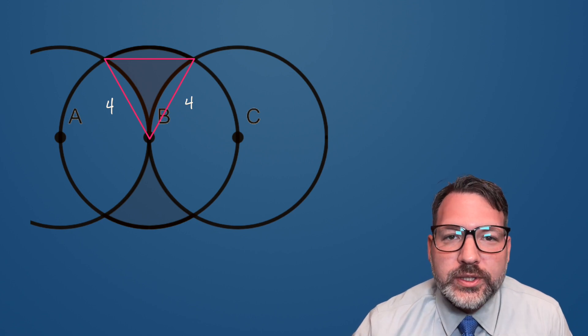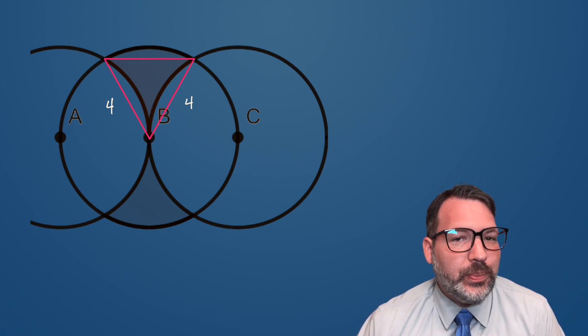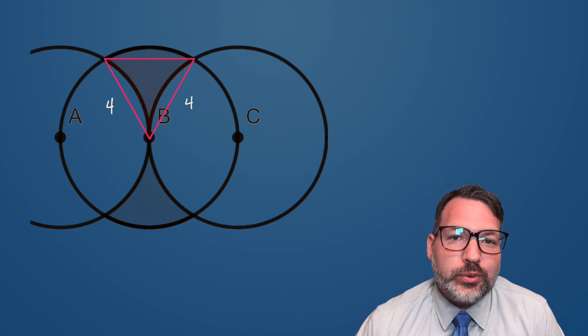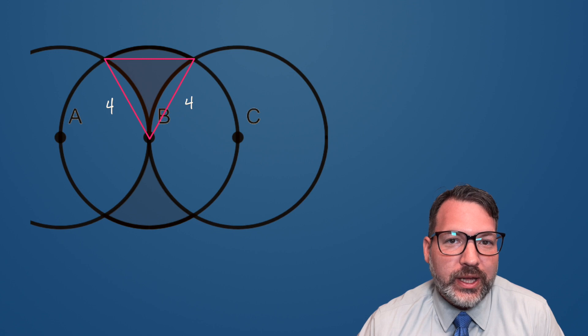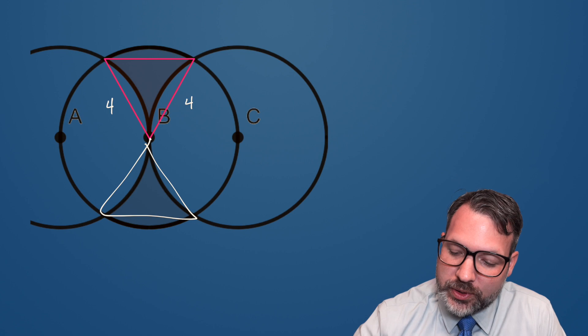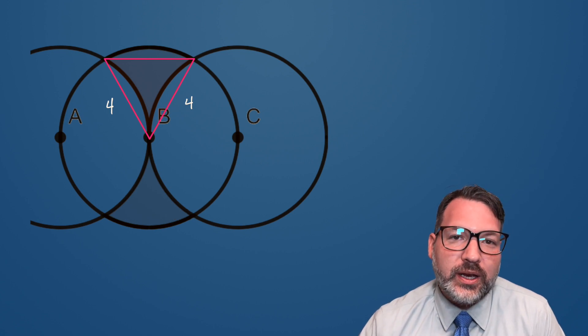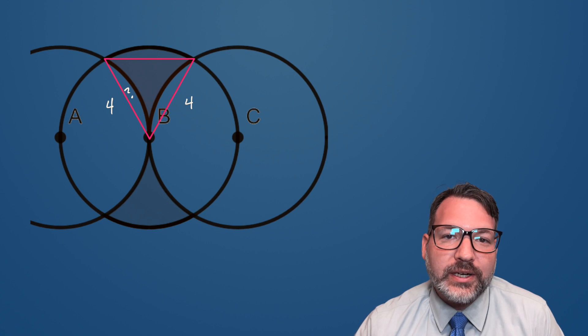If this were a multiple choice question, or if we only needed to roughly say what the area was, we're basically done at this point. 4 times √3 is about 6.8, so our answer clearly is a little smaller than 6.8 times 2, because again we have two of these different shapes. But in this case it's not a multiple choice question, so we do actually have to go ahead and figure out this missing area. That's the part that we want to subtract away.